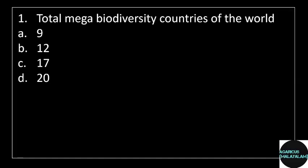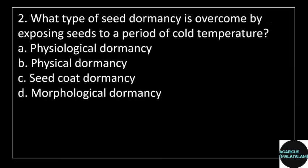First question: Total Mega Biodiversity Countries of the World. Answer options — Option A: 9, Option B: 12, Option C: 17, Option D: 20. Correct answer: Option C, 17.